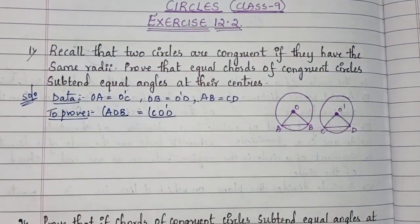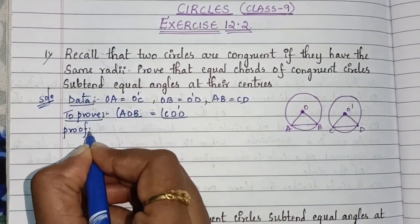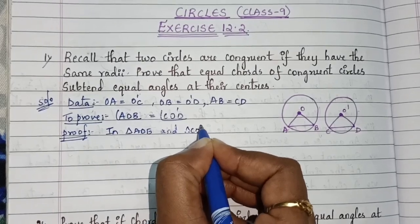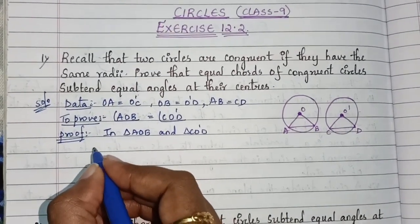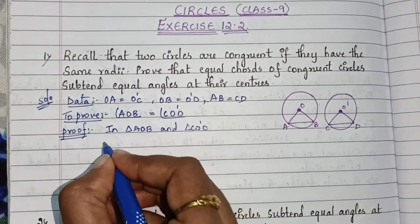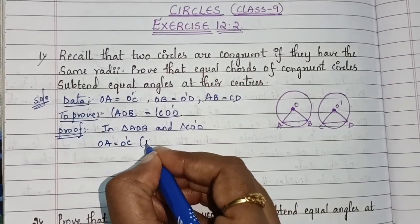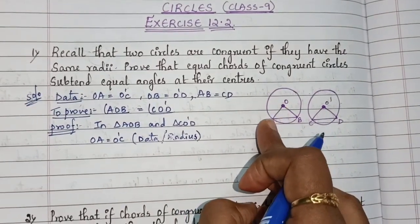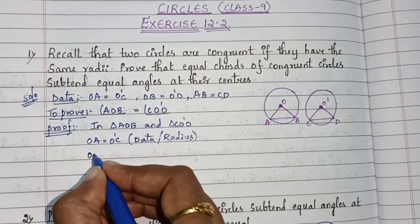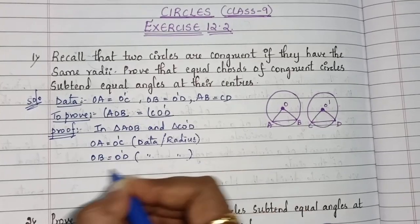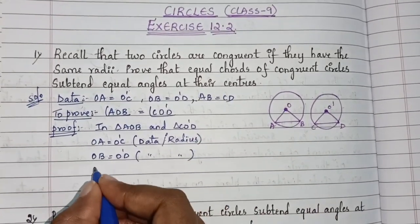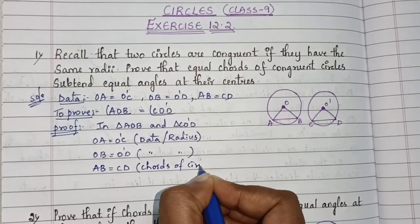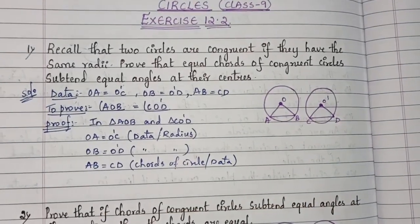For the proof, we consider triangle AOB and triangle CO'D. OA equals O'C — both are radii of their respective circles. OB equals O'D — also radii. And AB equals CD — these are the equal chords, given in the data.